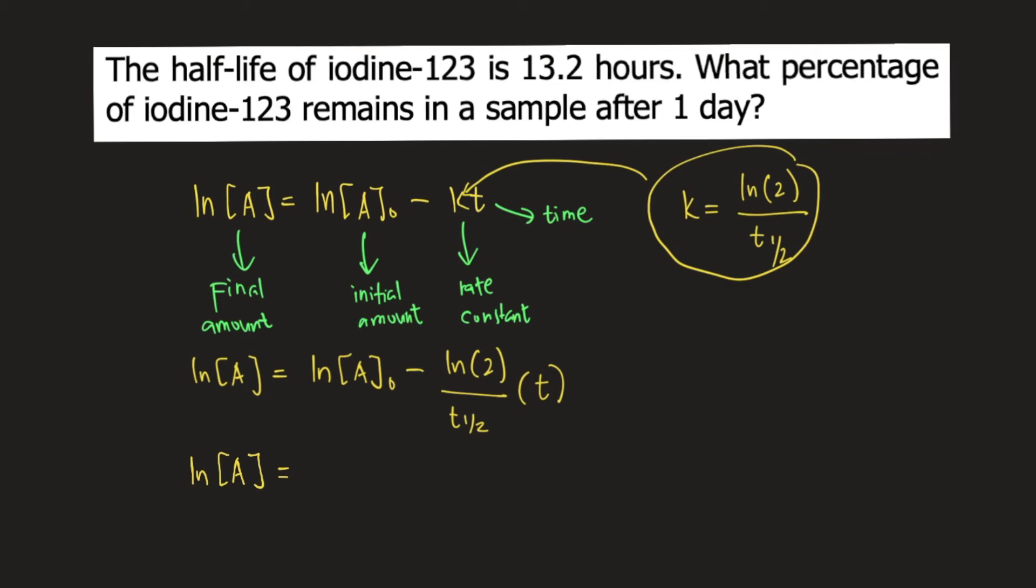you have 100% of iodine-123. So your initial amount would be 100%. So it would be ln(100) minus ln(2) divided by half-life.